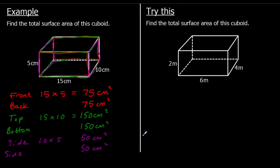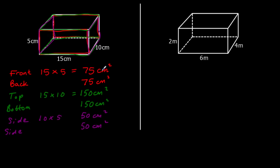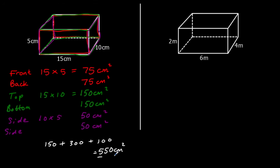So the total surface area is 75 plus 75 plus 150 plus 150 plus 50 plus 50. Two 75s make 150, two 150s are 300, two 50s are 100. So we've got 150 plus 300 plus 100, which gives us 550cm squared. So the total surface area is 550cm squared.